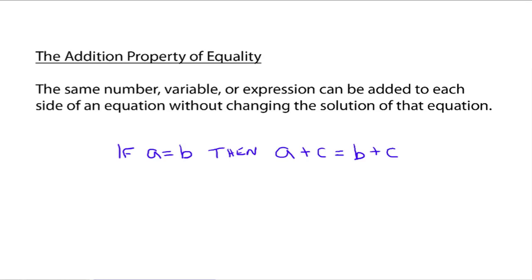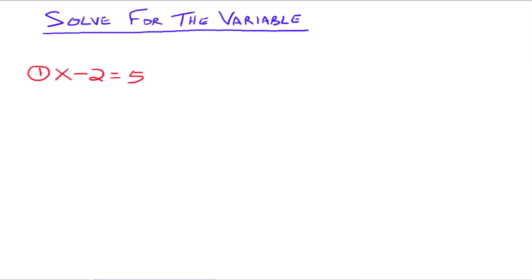Let's look at an example. When we're trying to solve equations, in general, we're trying to isolate the variable to see what number it will be equal to. There are other techniques for more advanced equations, but the basic idea still boils down to trying to get the variable isolated all by itself on one side of the equal sign.